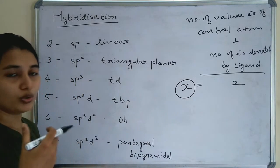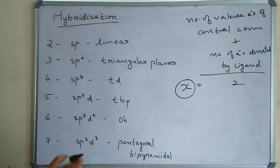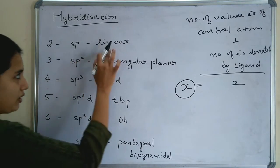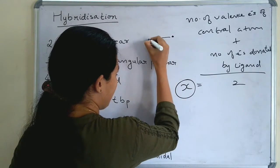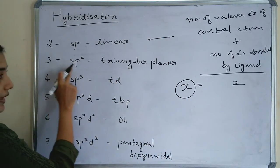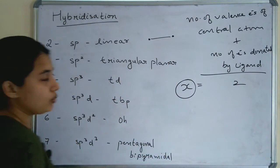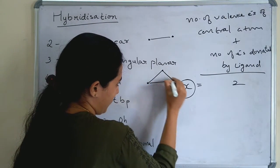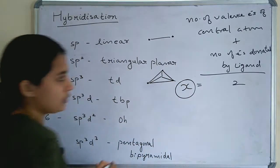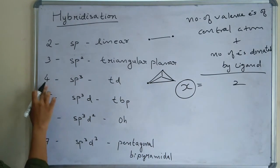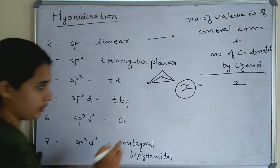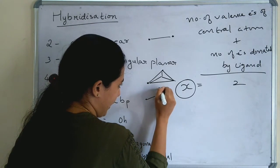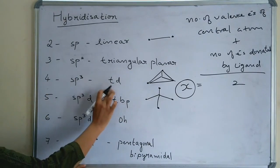If you want to know the shape, it is very easy. If x is 2 (sp), the shape is linear — the molecule will be linear. If it is sp2, the shape is trigonal planar. And for sp3, the shape is tetrahedral — tetrahedral has 4 atoms.